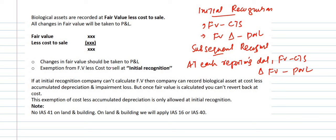If you are unable to determine the fair value less costs to sell at initial recognition, you may use the cost less accumulated depreciation and impairment losses as an exemption. However, once you can determine the fair value, you must not revert back to the cost model.